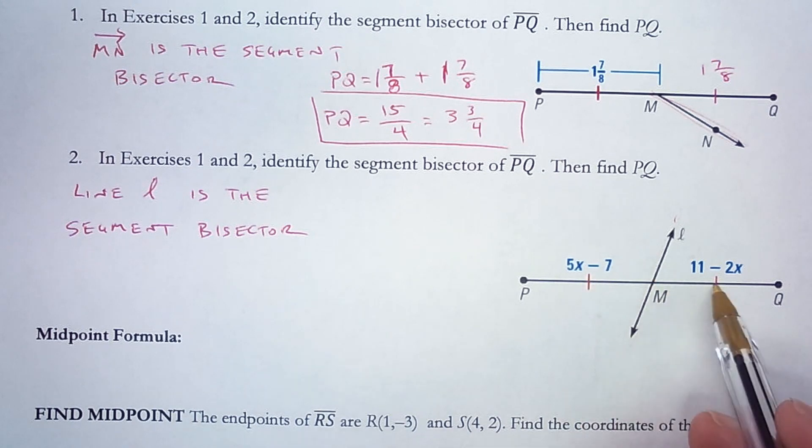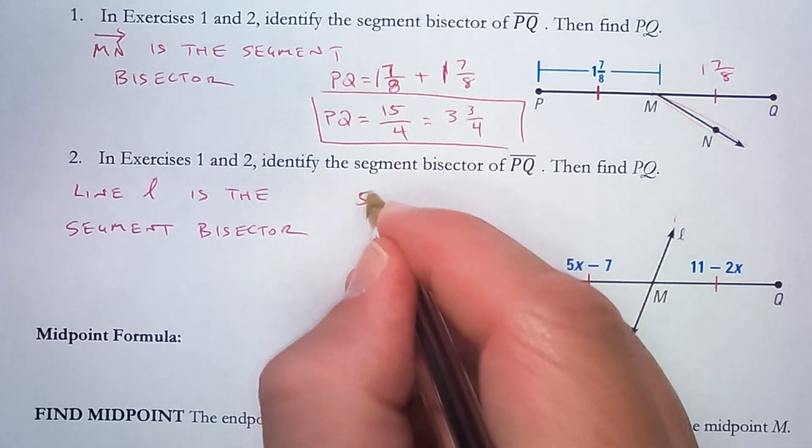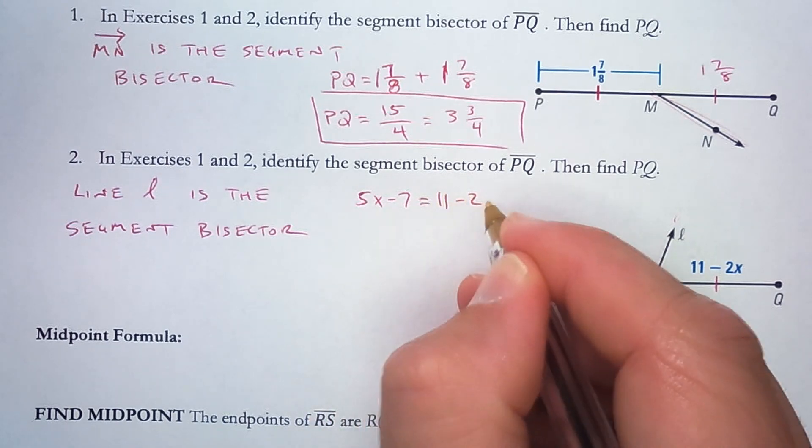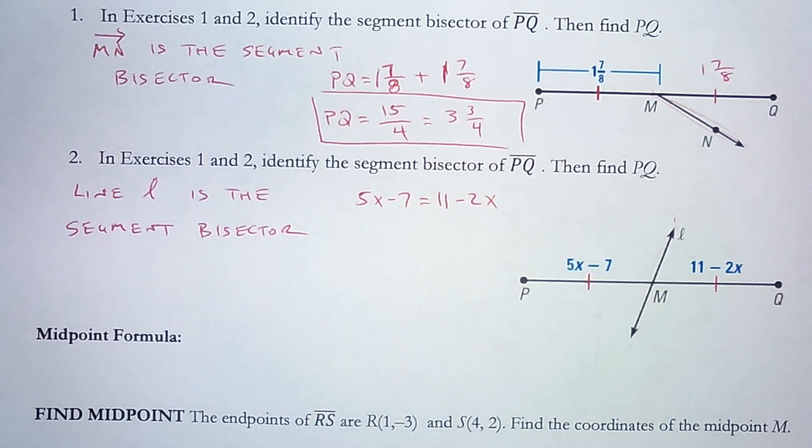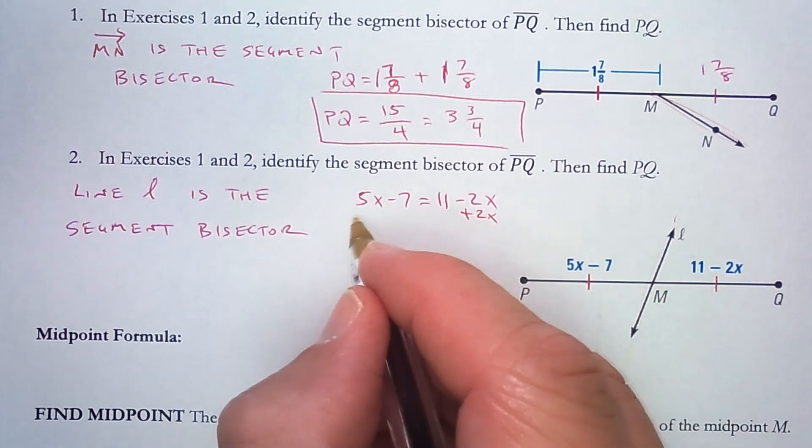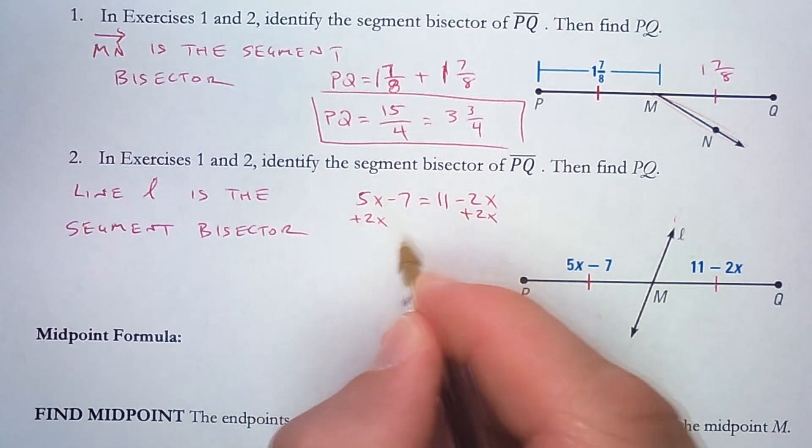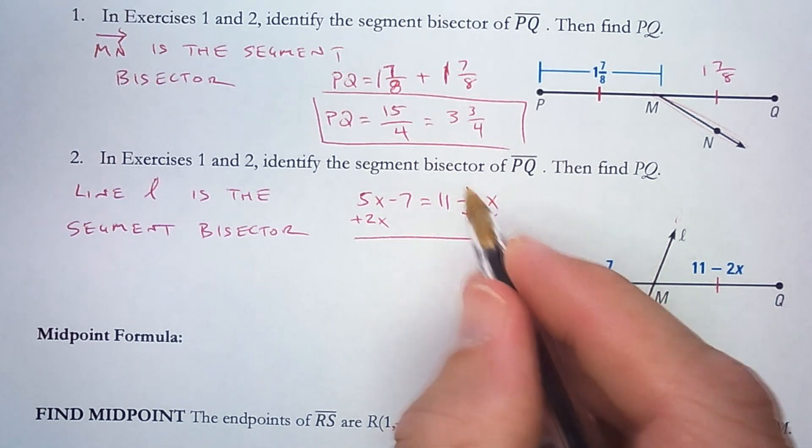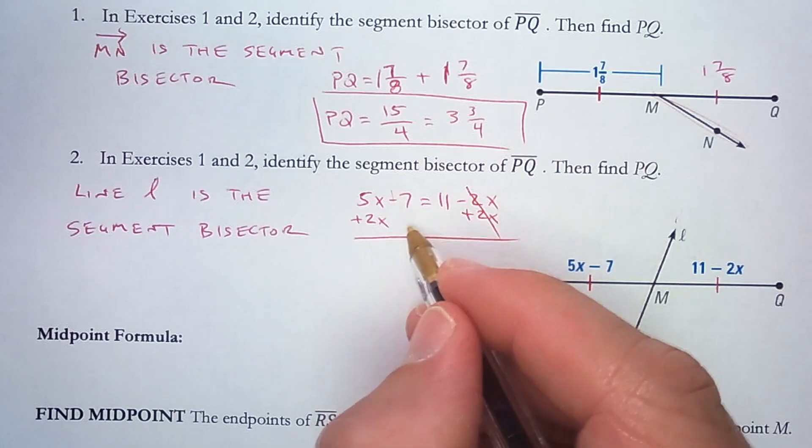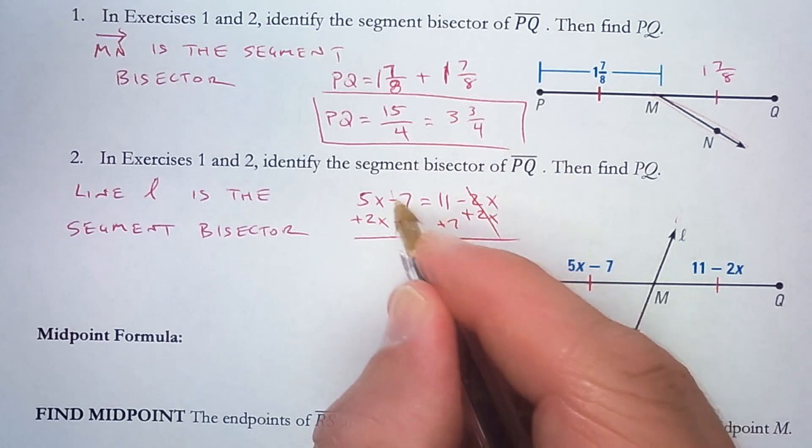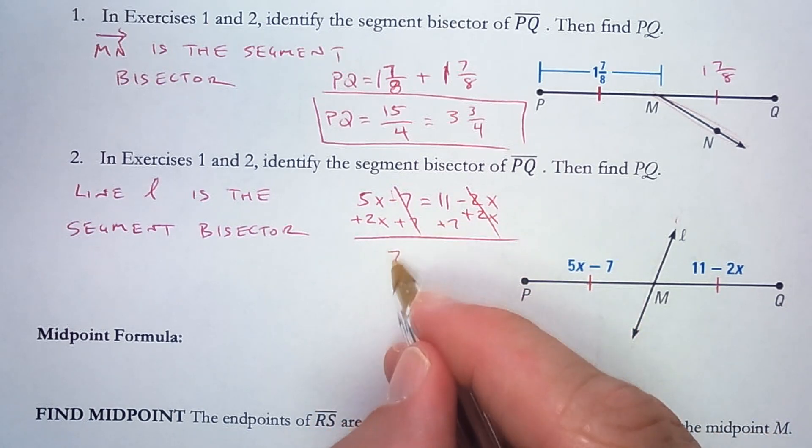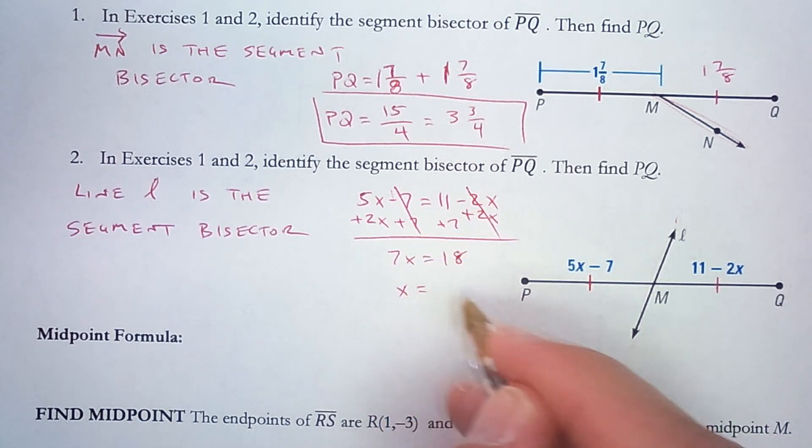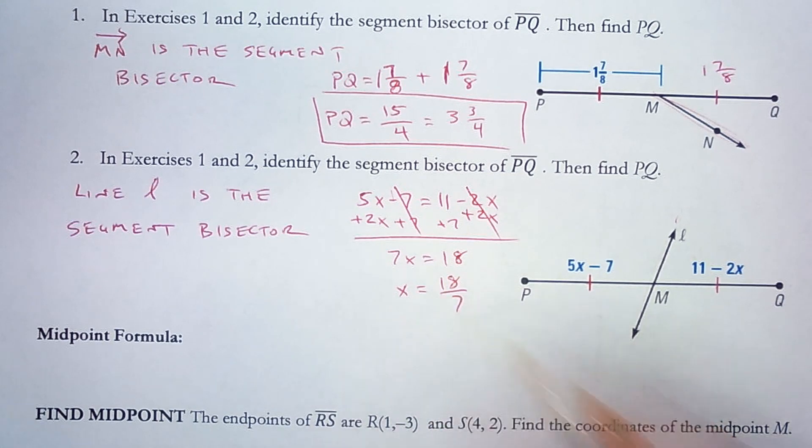So this time, since these are the same length, I'll set them equal to each other. 5x minus 7 equals 11 minus 2x. I would add this 2x to both sides because it's smaller than the 5x. And since I'm canceling out variables here, I will cancel out constants here. And that will give me 7x equals 18. So when I divide, I get x equals 18 over 7.